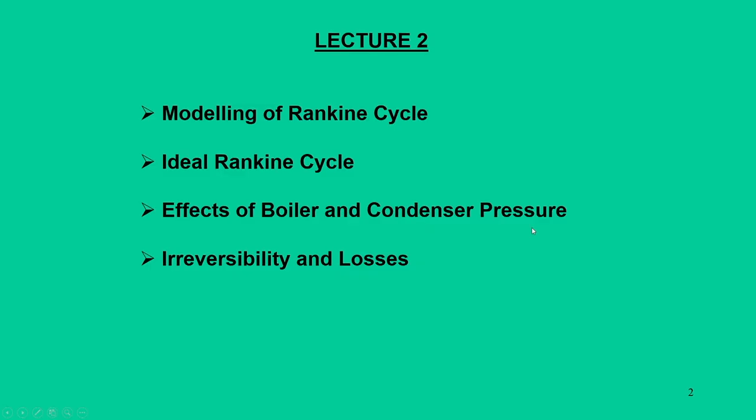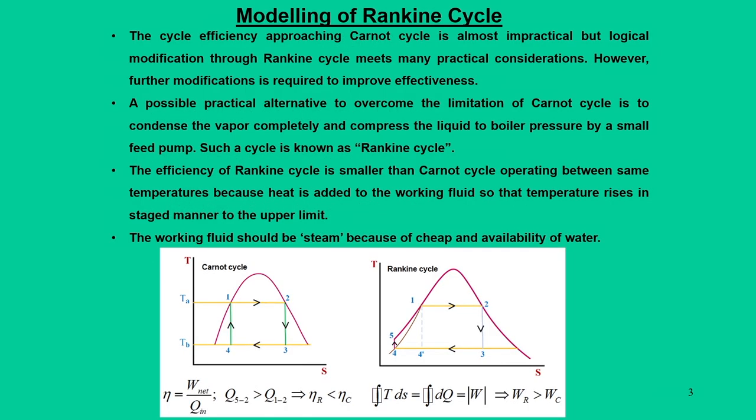Subsequently, we are going to discuss the effect of irreversibility, losses, and process inefficiency, and how they affect the cycle. We also need to see the effect of condenser and boiler pressures, and how changes in these pressures will have a net effect on the Rankine cycle. These are the summary of today's lecture. Now let me start the first topic: modeling of Rankine cycles.